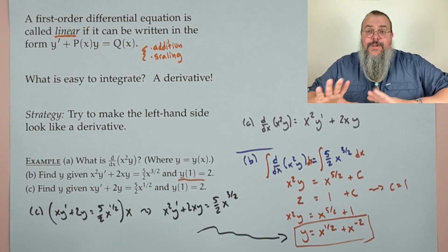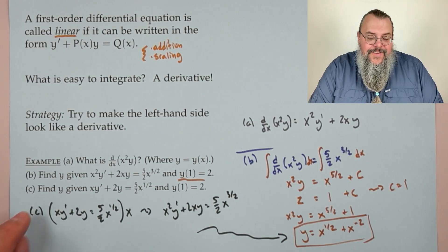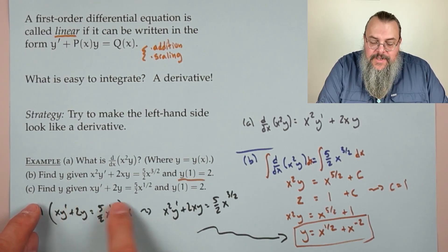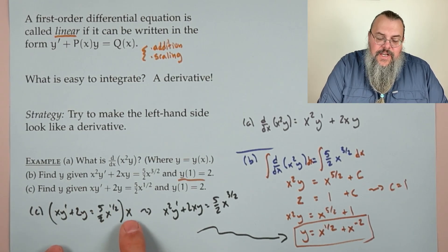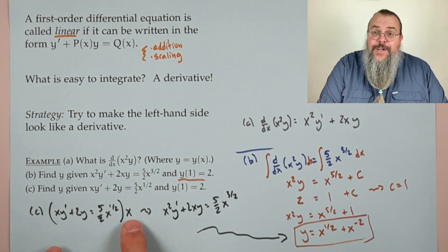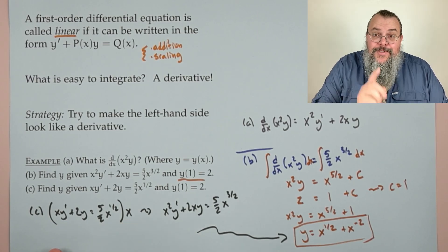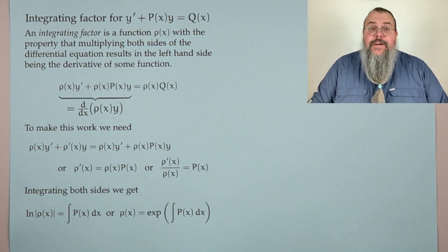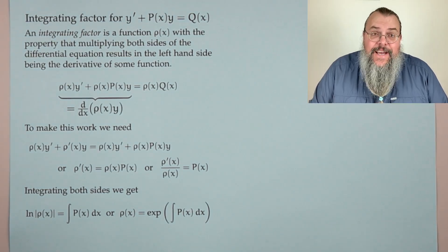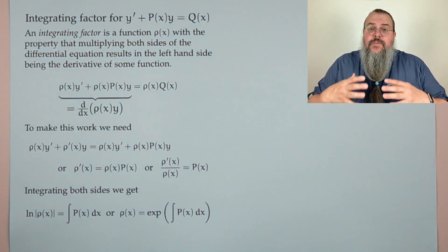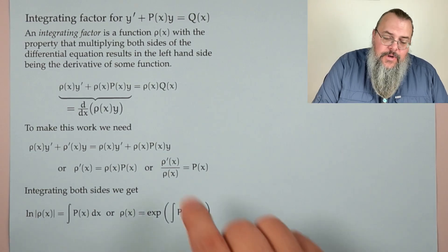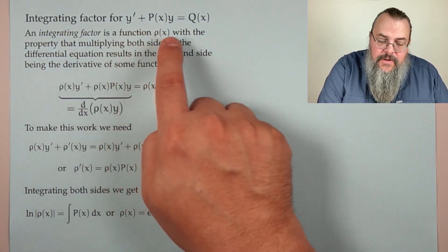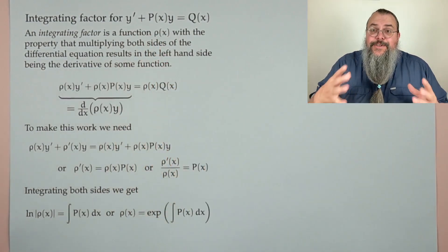Looking ahead: we'll be given a differential equation and the question is — how do we find the right thing to multiply by? That brings up the idea of an integrating factor. We're trying to make the left-hand side of y′ + p(x)y look like a derivative, so we multiply by some function ρ(x).